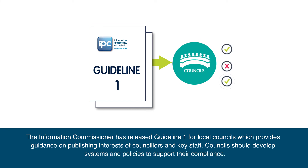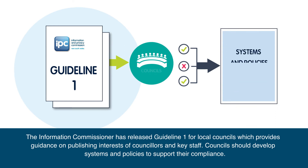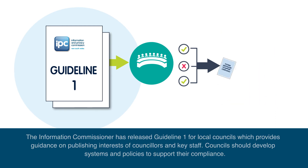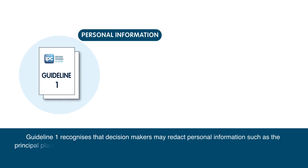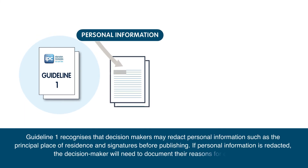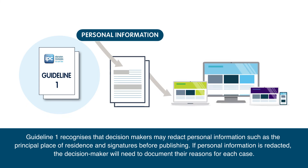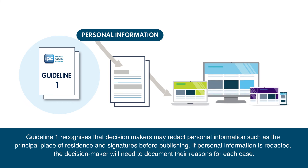The Information Commissioner has released Guideline 1 for local councils, which provides guidance on publishing interests of councillors and key staff. Councils should develop systems and policies to support their compliance. Guideline 1 recognises that decision-makers may redact personal information, such as the principal place of residence and signature, before publishing. If personal information is redacted, the decision-maker will need to document their reasons for each case.